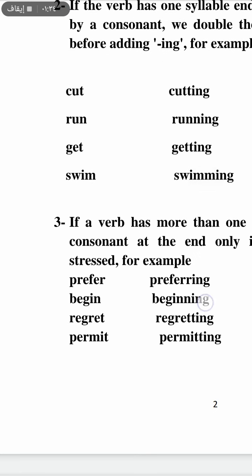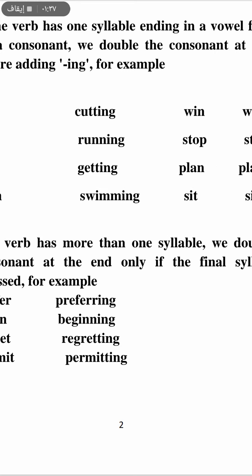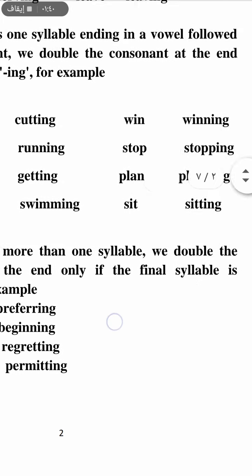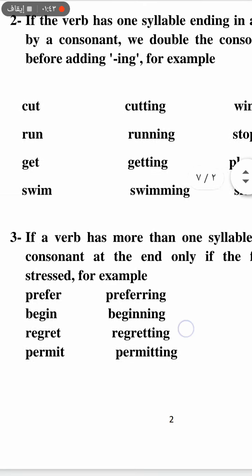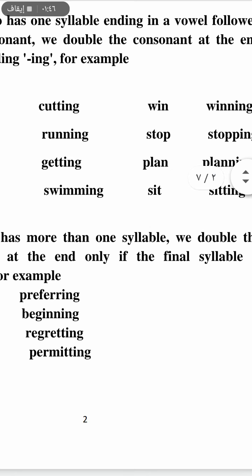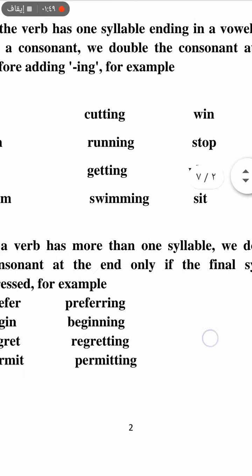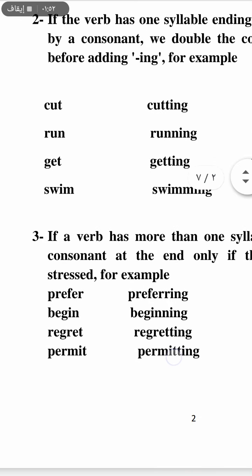Rule number three: if a verb has more than one syllable and the final syllable is stressed — for example: prefer, begin, regret, permit — we double the final consonant before adding -ing.